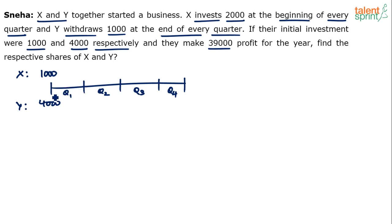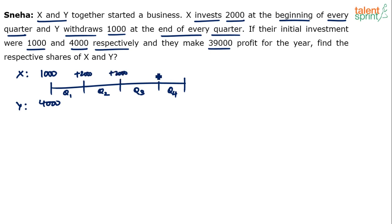At the beginning of quarter 1 was the start of the year when he invested 1,000. After that, he adds 2,000 rupees at the beginning of quarter 2, another 2,000 at the beginning of quarter 3, and another 2,000 at the beginning of quarter 4.